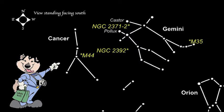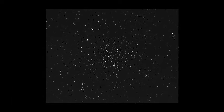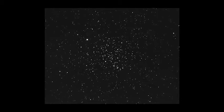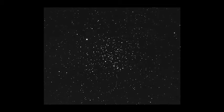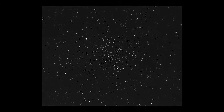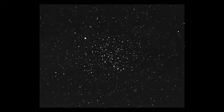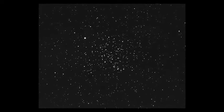Another Messier object in Cancer is M67, also an open cluster. But where the beehive is estimated to be around 600 million years old, M67 is between 3.2 and 5 billion years old. It is one of the oldest clusters known. It has a magnitude of 6.1, and most of the stars are similar to our sun. But it also contains some red giants.